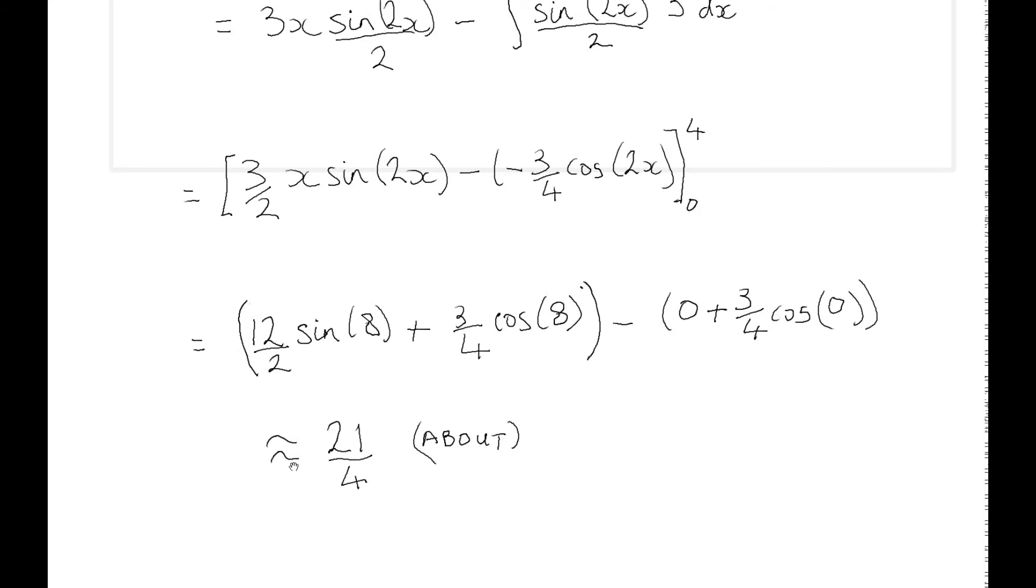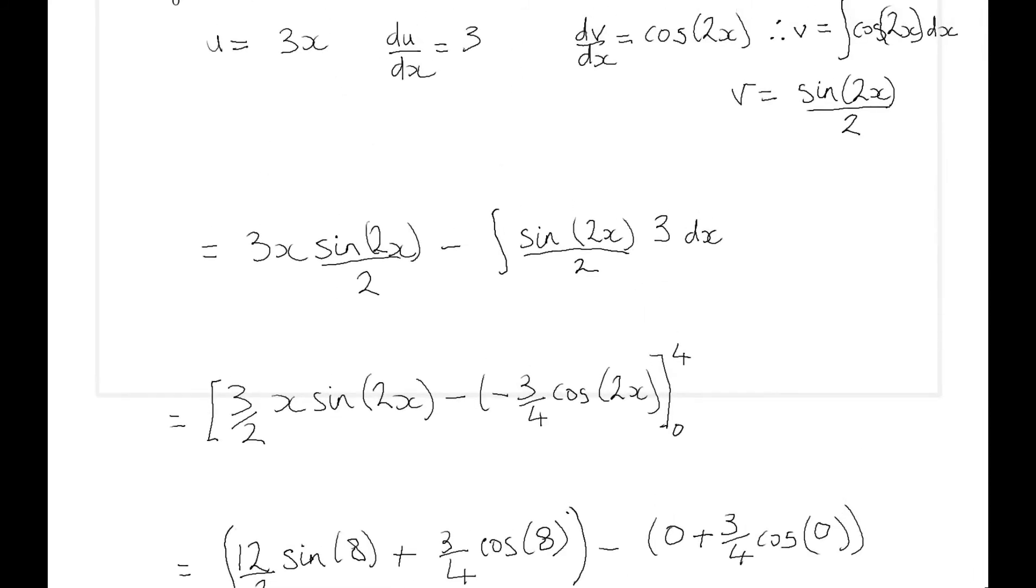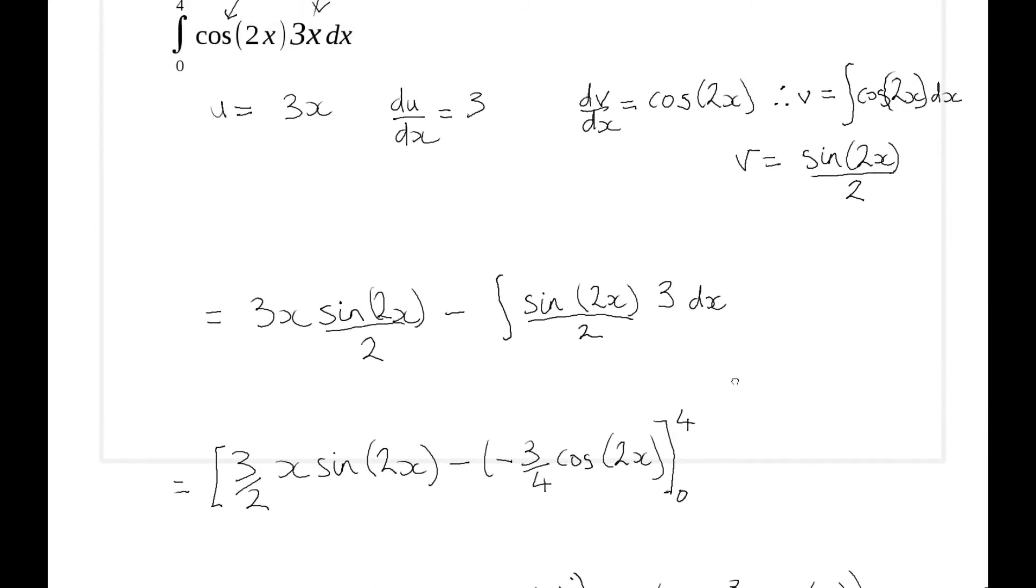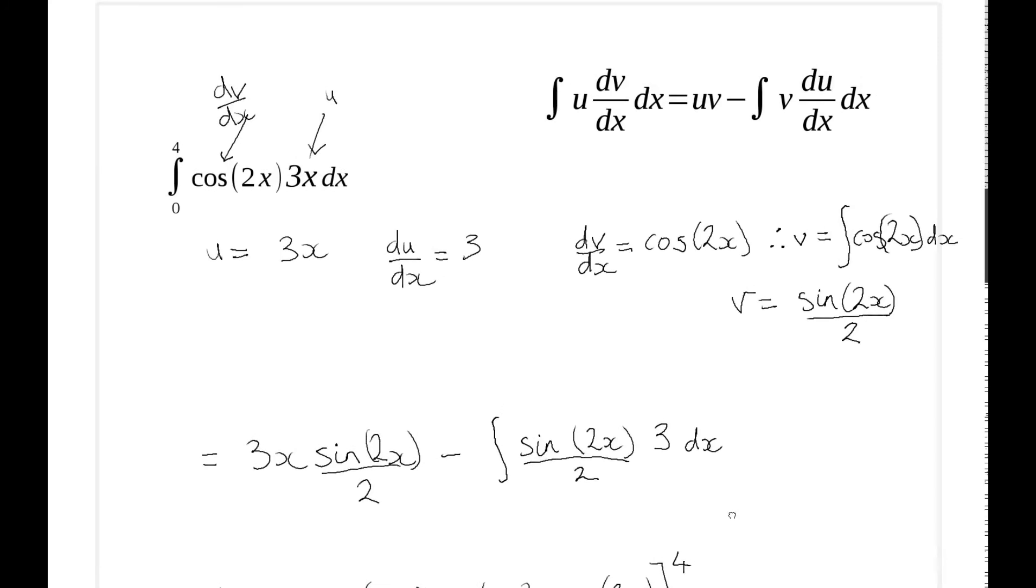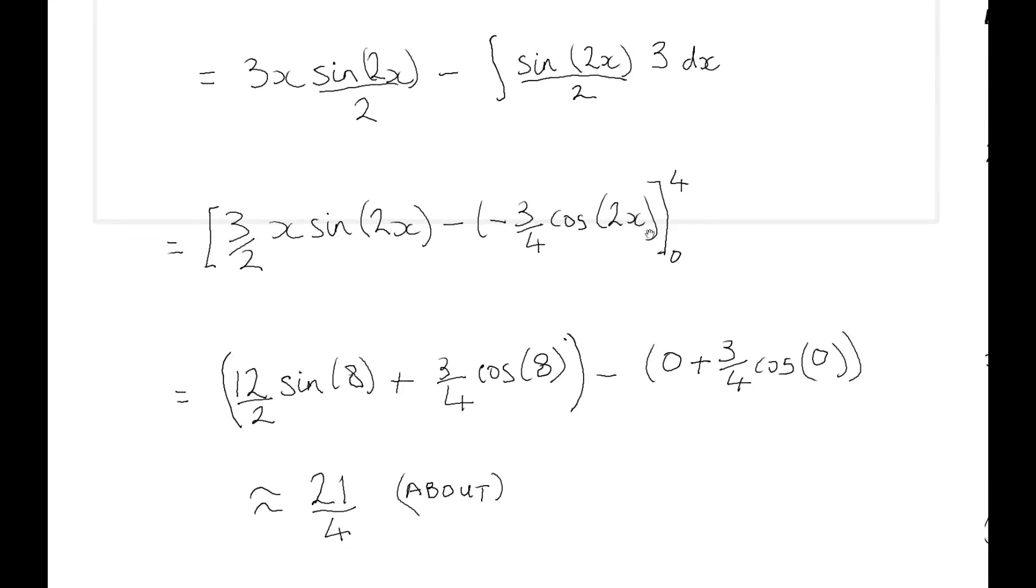If I do the actual maths, I end up with about 21 over 4, about 21 quarters. It's 0.01 actually out, but it's near enough for what we're doing here. So that maths is just straightforward. Verify it for yourself, work your way through this example and see how you find it goes. Don't forget to put your calculator into radians if you're doing any of the maths.